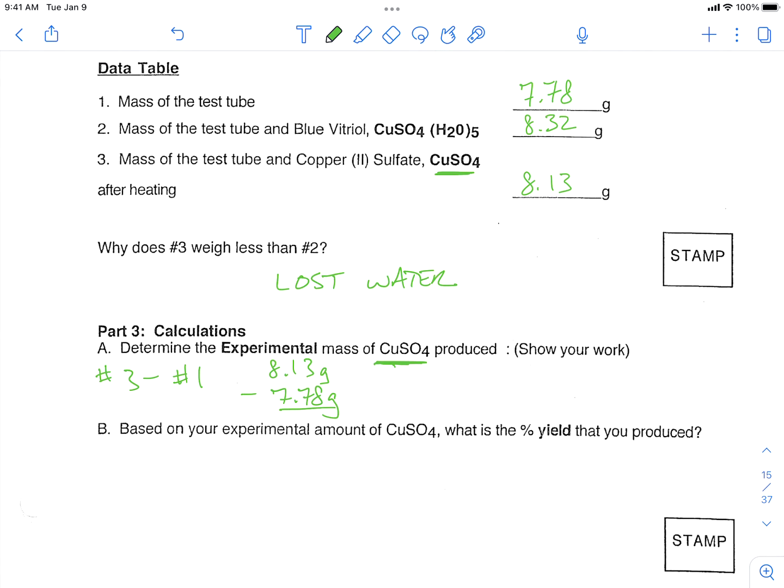And that's going to tell us how much we made in our experiment. So 8.13 minus 7.78, and that's going to be 0.35 grams. And that's just the CuSO4.